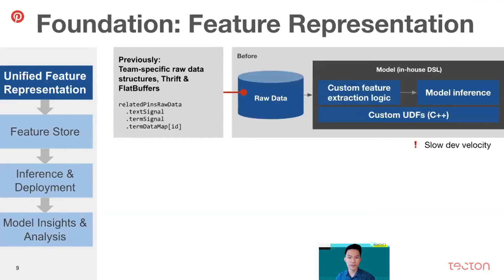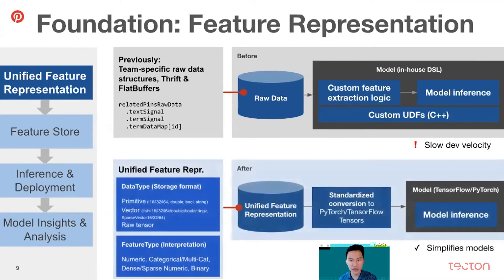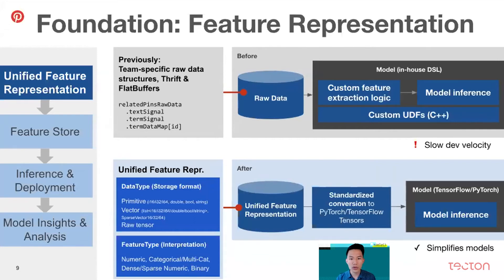Let's look at the feature representation first. Previously, each team had to prepare its own raw data in custom and highly nested Thrift structures with no standardization. This meant each team had complex decoding logic inside their models, and it blocked teams from sharing features. The approach we proposed was to define a standard container for storing features, general enough for any kind of data. We separated the notion of data type — the physical storage format — from the feature type, which is what that data represents. For example, the storage type could be a vector of ints, but those ints could represent different dimensions of a dense numeric vector or a multi-categorical feature. This feature representation greatly simplified the models, because we can now provide well-defined conversions into inputs for standard models like TensorFlow and PyTorch, eliminating all that custom parsing logic.